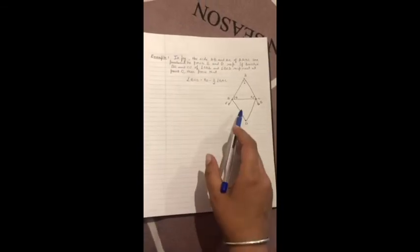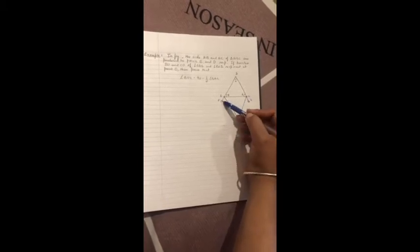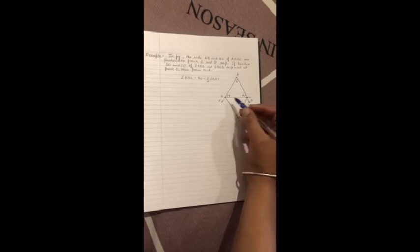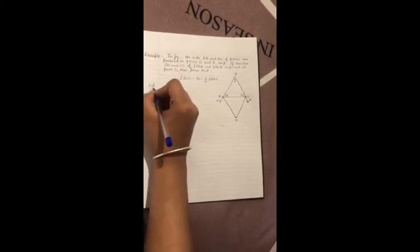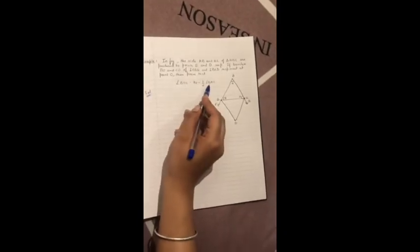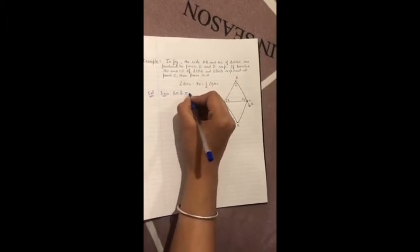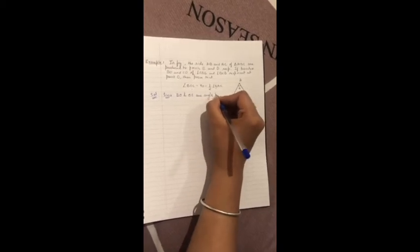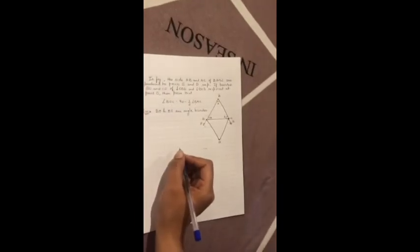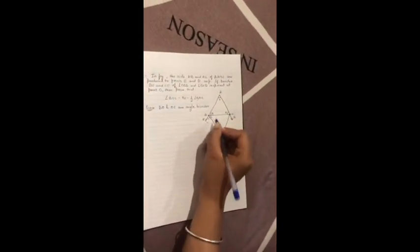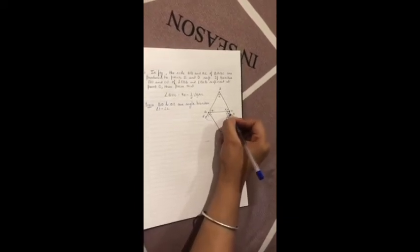Now the last example that is very important. In figure, the side AB is produced and BAC of triangle are produced to E and D respectively. If bisector BO and OC of angle respectively meet at O, we have to prove this. The given thing is since BO and OC are angle bisector, that means angle 1 is equals to angle 2 and angle 3 is equals to angle 4.